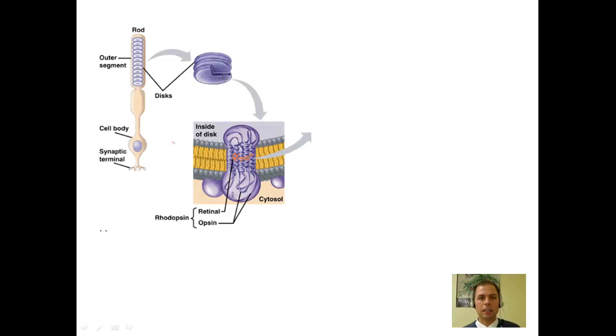So let's consider now the discs that are internal to my rod. These membranous sacs, or referred to as discs here in our diagram, contain in their own membrane this large purple molecule. This large purple molecule is a protein referred to as opsin, combined to a pigment seen here as retinol, and collectively we refer to it as rhodopsin.